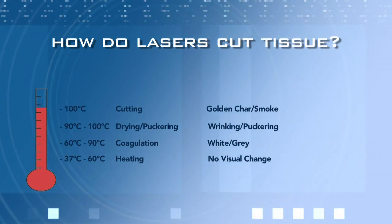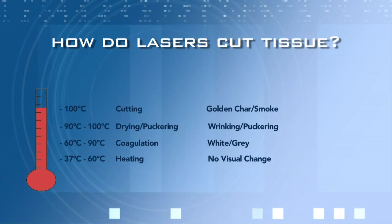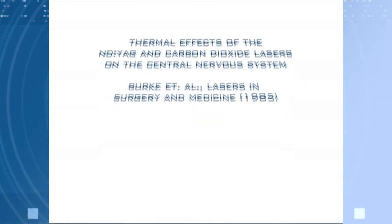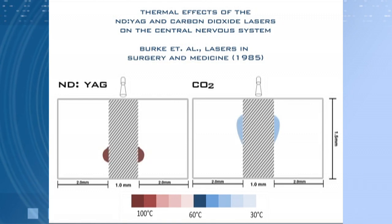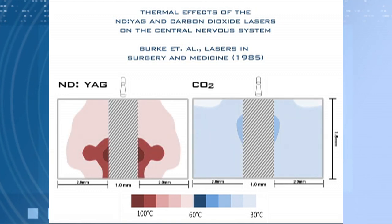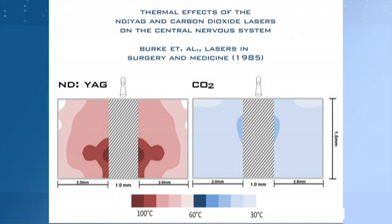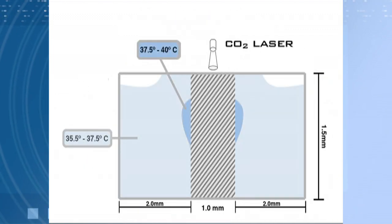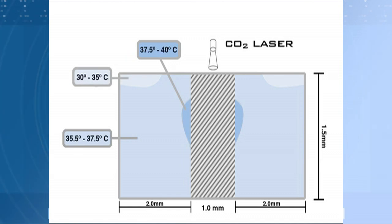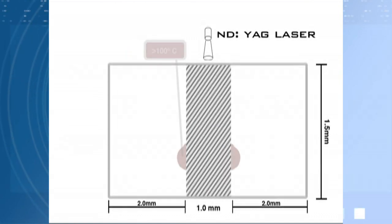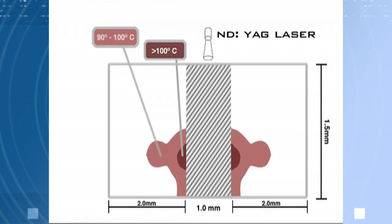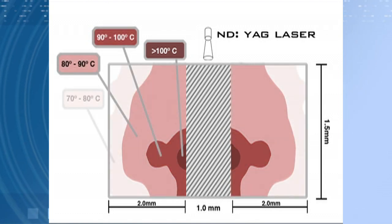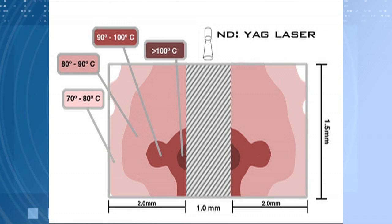Smoke is also produced because some of the non-aqueous tissue is particleized and removed in the smoke plume. A study performed at Northwestern University in 1985 quantified the cutting and temperature profiles for the CO2 and ND-YAG lasers. Equivalent amounts of CO2 and ND-YAG energy were applied to rat's cerebral cortex. The CO2 laser did not raise tissue surrounding the application zone above 38 degrees Celsius, while in contrast, the ND-YAG laser raised tissue temperatures up to 106 degrees. Since the threshold for tissue damage is 60 degrees, these results demonstrate the small cutting profile and minimal thermal damage associated with the CO2 laser.